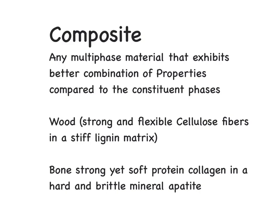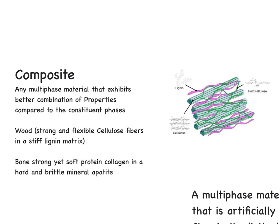In wood, as you can see here, there are strong flexible cellulose fibers. These cellulose fibers are very strong but flexible, and they are held together in a stiff lignin matrix. So the cellulose fibers are flexible but you have a very stiff lignin matrix to hold them together, which effectively results in better properties for the wood altogether.